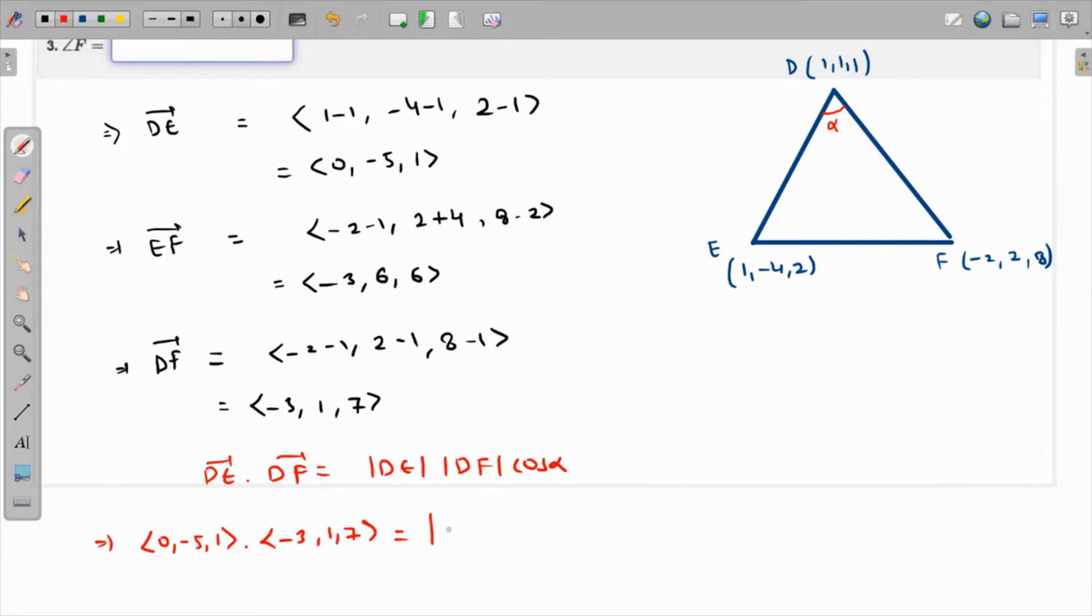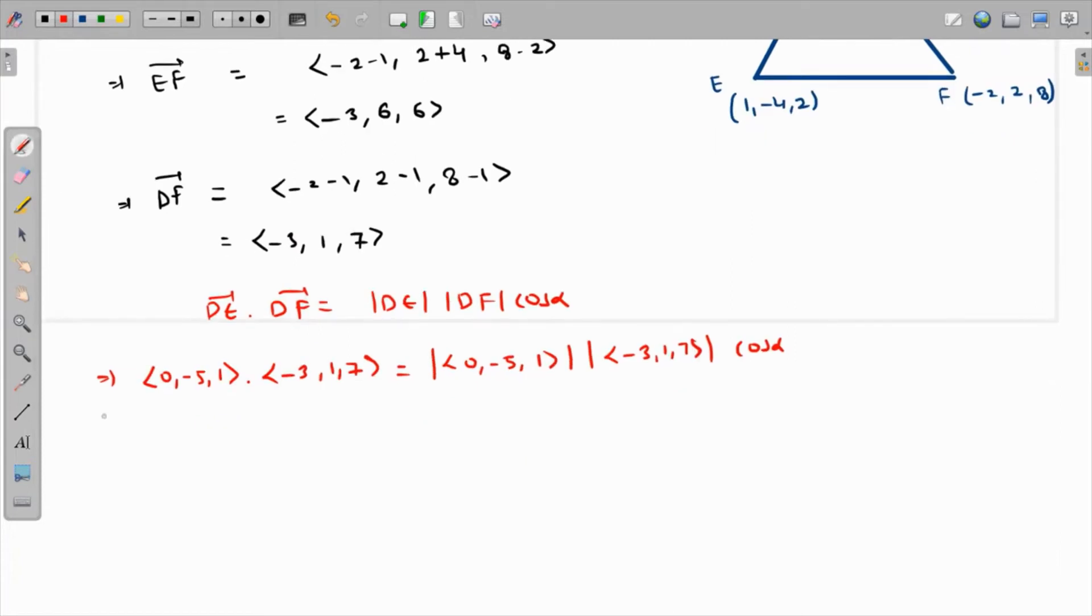The magnitude of DF is going to be the magnitude of <-3, 1, 7>. If we find the dot product, that's 0 minus 5 plus 7. The magnitude will be root of 0 squared plus 5 squared plus 1 squared.